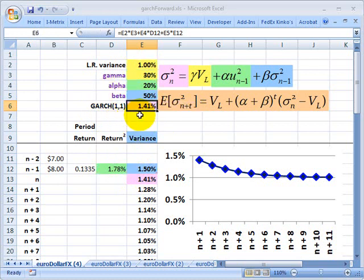And that gets me the GARCH(1,1) estimate for today, where today is n, and so you can see it's 1.41% is the estimate of my variance today. Now, to predict or forecast with the GARCH(1,1) model,